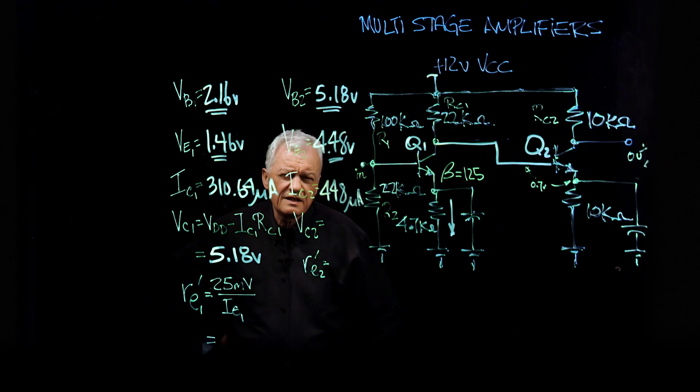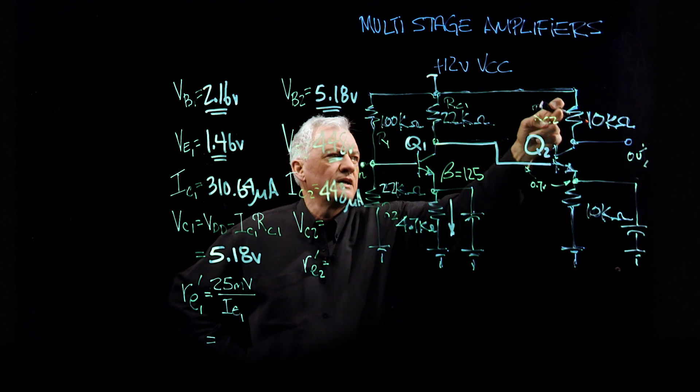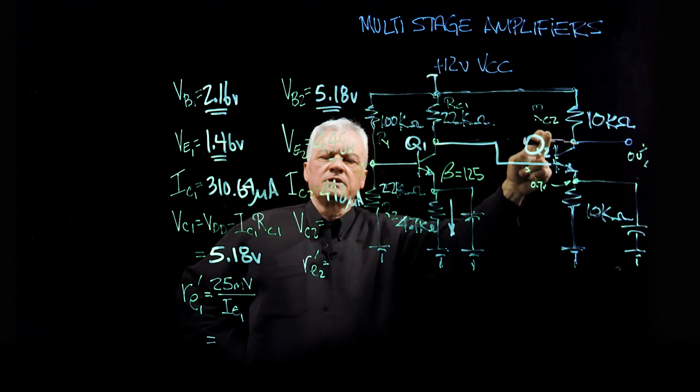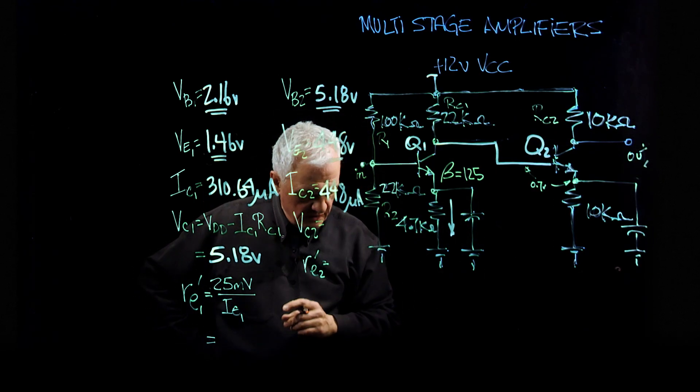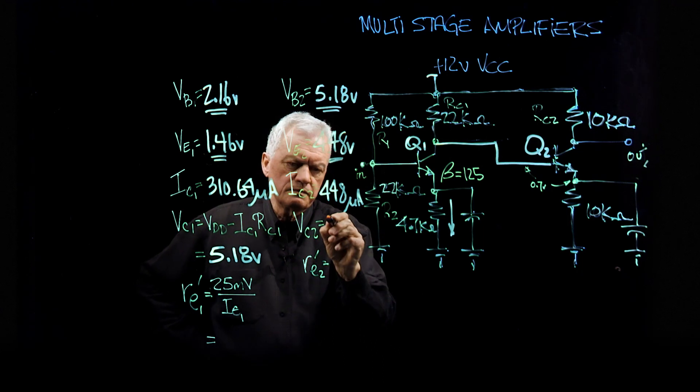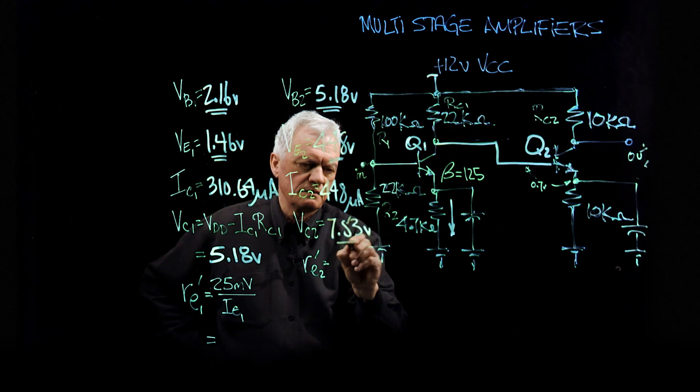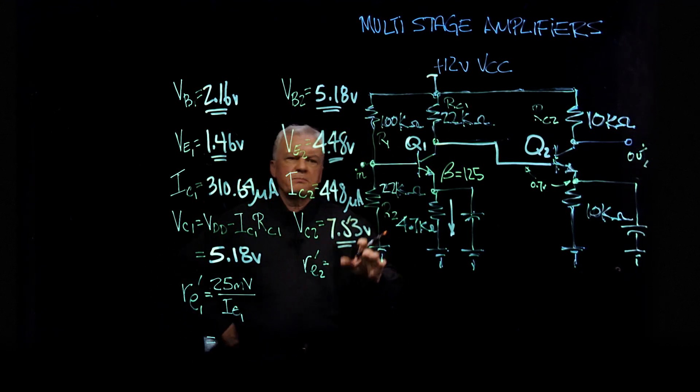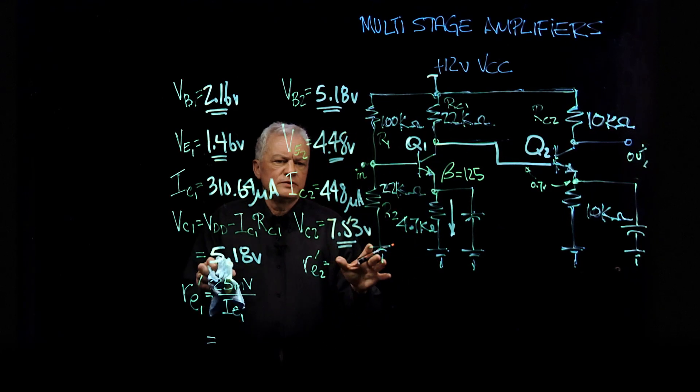And if that is the case, 448 microamps through this resistor. So 12 volts minus IC times RC2 will give me 12 minus 4.48 which will be approximately 7.53 volts. So we've set up from a DC perspective, we've set up our two stages.